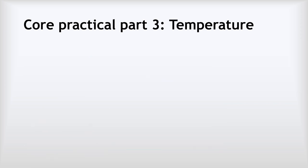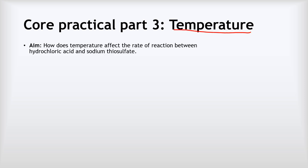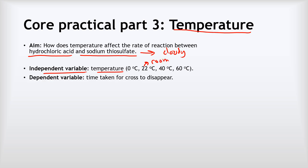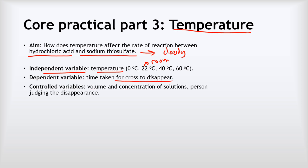Our last part of the practical was investigating the effect of temperature — specifically, how does the temperature affect the rate of reaction between hydrochloric acid and sodium thiosulfate? Importantly, this reaction goes cloudy, so we can use the obscured cross method. Our independent variable was the temperature: we tested it at 0, 22, 40 and 60°C (22°C being room temperature). Our dependent variable was the time taken for the cross to disappear. Our controlled variables were the volume and concentration of the solutions, and the person judging when the cross disappeared.